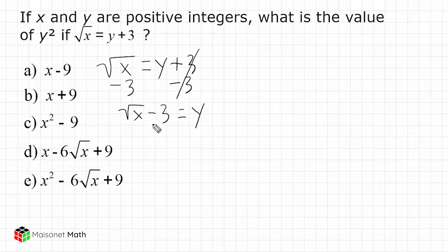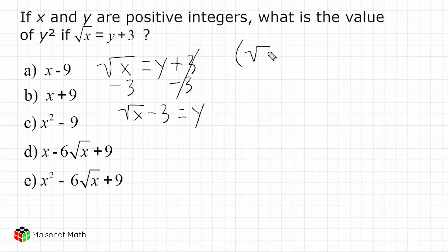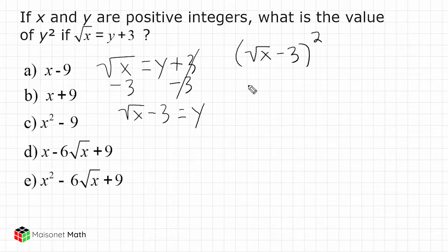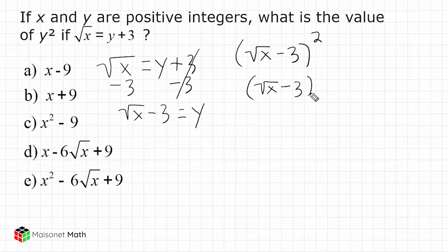Now we know y is equal to the square root of x minus 3. So what we have to do is take y and square it. We take the square root of x minus 3 and square it, which is basically multiplying this term by itself. Written in expanded form, we have the square root of x minus 3, multiplied by the square root of x minus 3.